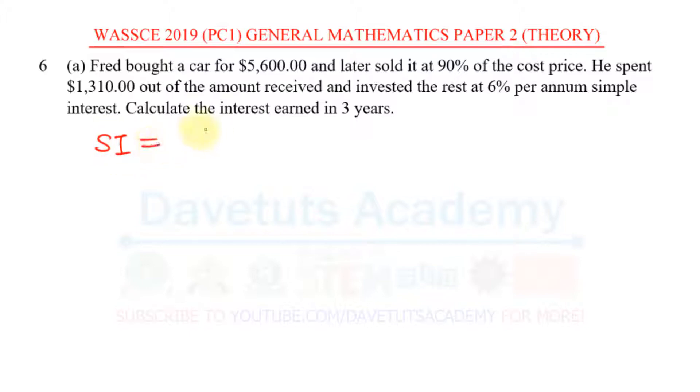If you recollect, simple interest is nothing but principal times rate times time over 100. Now, from the question, we can see that we have been given the time, the time is three years. We have been given the rate, the rate is 6%. But we don't know the principal.